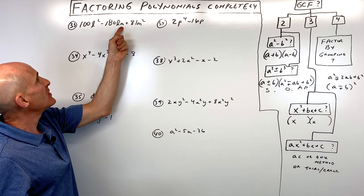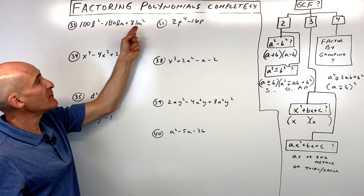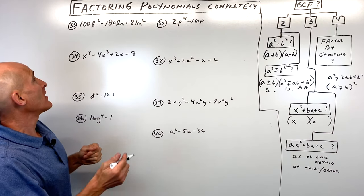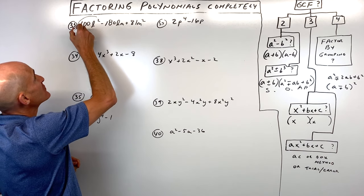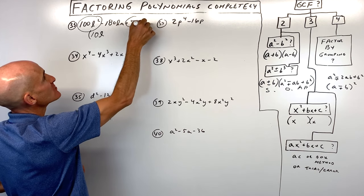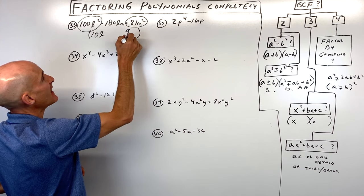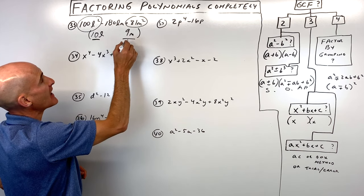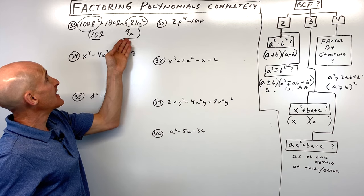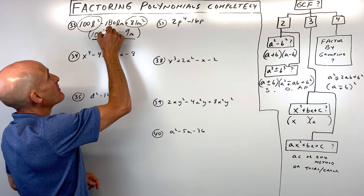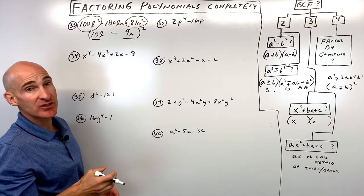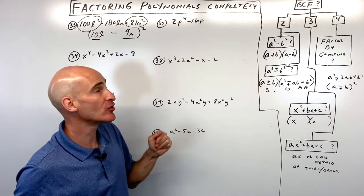Number thirty-three has no greatest common factor and a leading coefficient that's not 1. Check: is 10l a perfect square? Yes. Is 9m a perfect square? Yes. Is 10l times 9m doubled equal to 180lm? 10l times 9m is 90lm, doubled is 180lm. So since the middle term is minus 180lm, this is 10l minus 9m quantity squared — a perfect square trinomial.